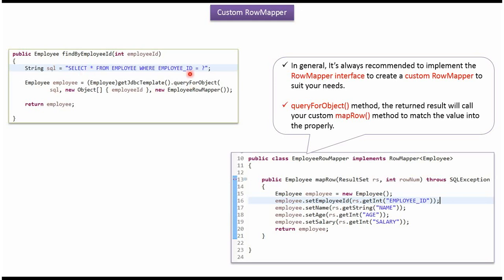And it returns the employee object. Here we are calling the queryForObject method of the JDBCTemplate object and passing the SQL. This is the SQL. Here we are passing the EmployeeID parameter and passing the EmployeeRowMapper object.